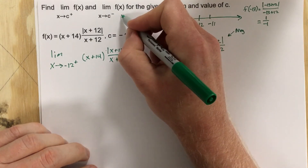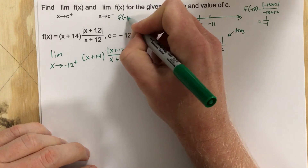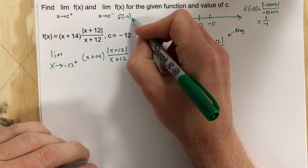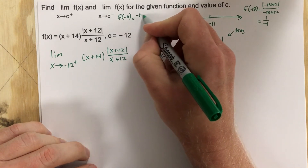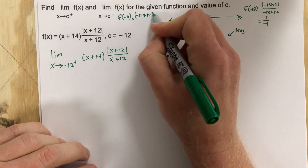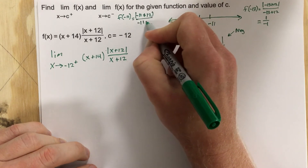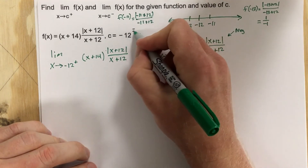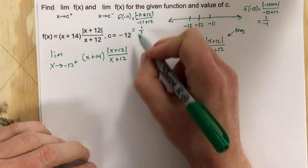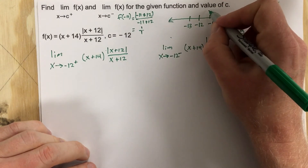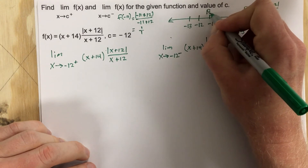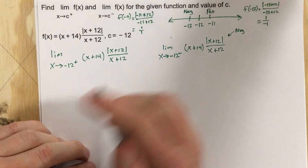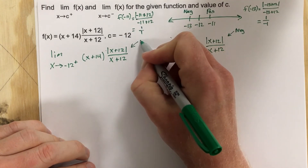Now let's plug in negative 11 since we're approaching negative 12 from the right. That gives absolute value of negative 11 plus 12 over negative 11 plus 12, which is the absolute value of 1 over 1 — that's 1 over 1, a positive number. So anything to the right of negative 12 gives a positive value for this function, and anything to the left gives a negative value.